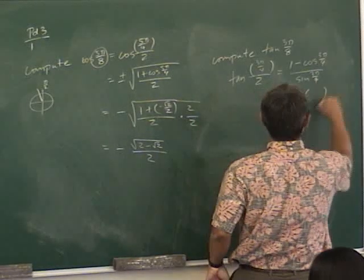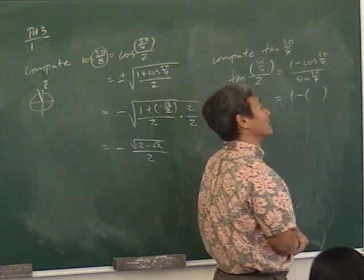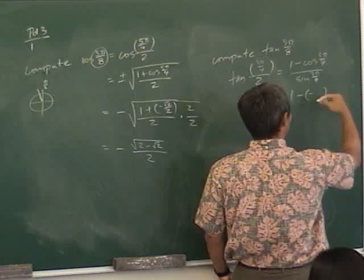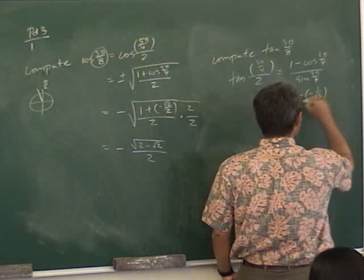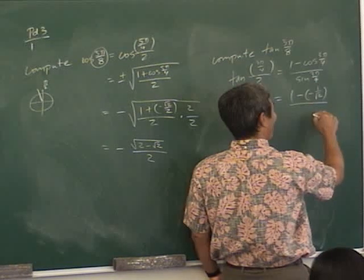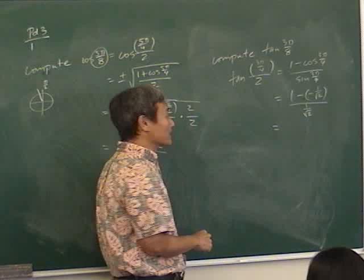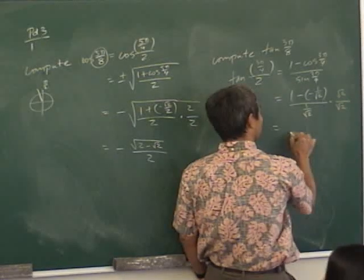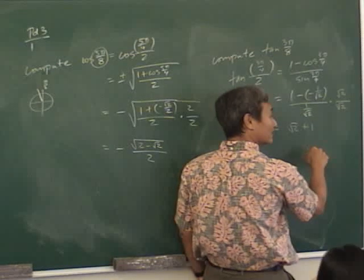Tangent(3π/8) = (1 − cosine(3π/4))/sine(3π/4). Cosine(3π/4) = −1/√2 and sine(3π/4) = 1/√2. It's better to use 1/√2 here. So: (1 − (−1/√2))/(1/√2) = (1 + 1/√2)/(1/√2). Multiply top and bottom by √2: you get (√2 + 1)/1. So the answer is 1 + √2.